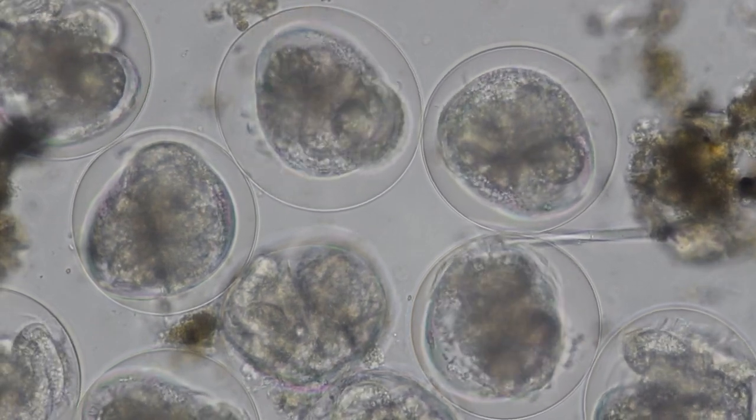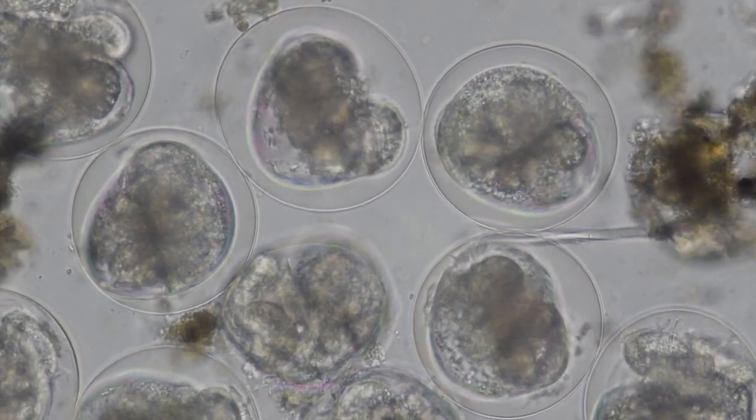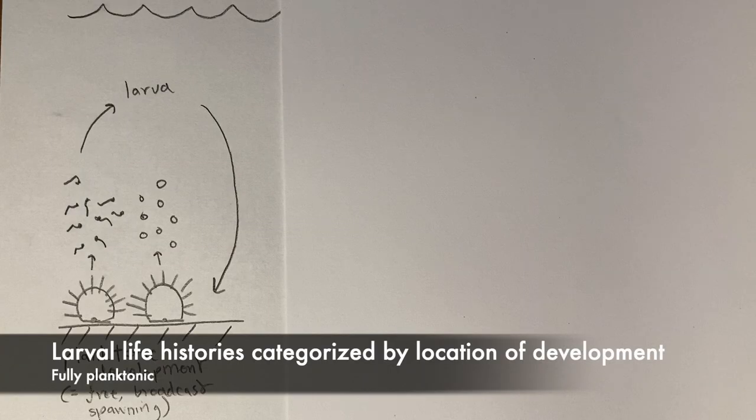Another way to categorize larvae is by where development happens. In many species, like in these expertly drawn sea urchins, adults broadcast spawn their gametes into the plankton where fertilization and all of embryonic and larval development happen. Eventually the larvae metamorphose and settle back to the seafloor. We can call those fully planktonic larval life cycles.